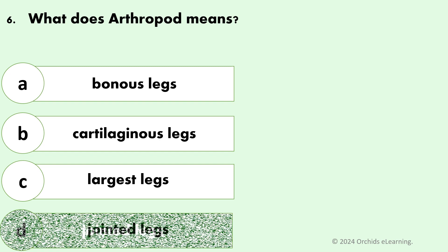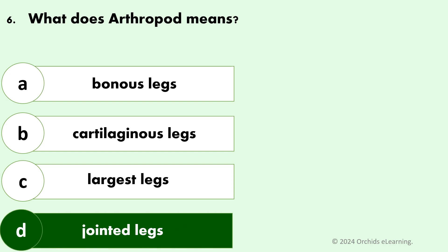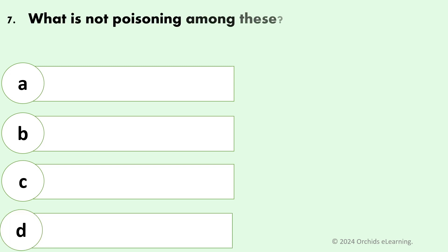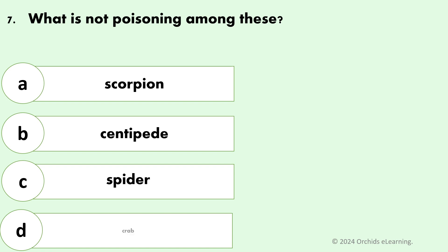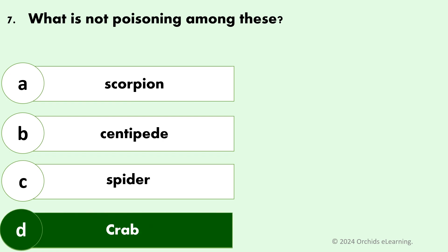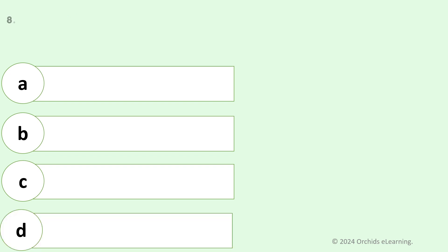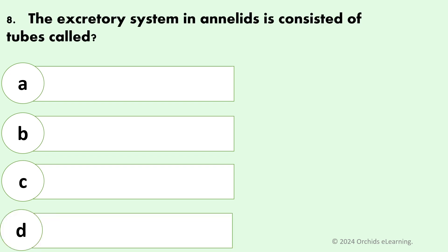Answer: D — Jointed legs. Which of these is not poisonous? Answer: D — Crab. The excretory system in annelids consists of tubes called?